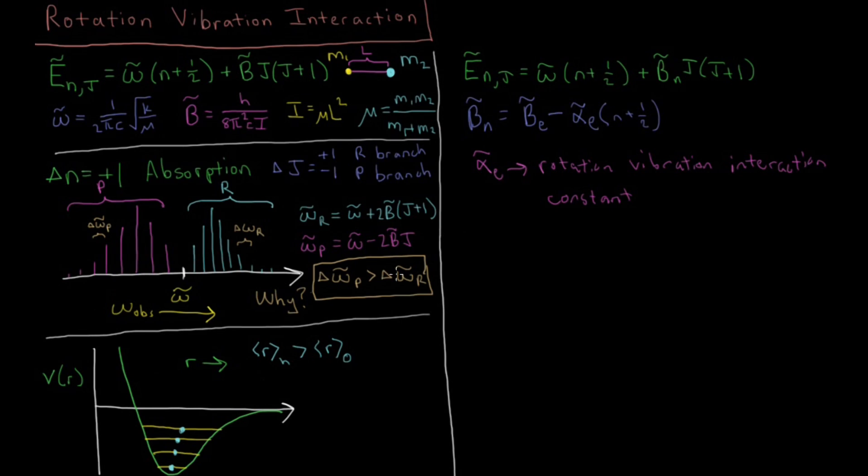And so what does this end up meaning for us? Well we can see that since as n goes up, that means our bond length L is going to go up slightly. Because L is in the moment of inertia that means our moment of inertia goes up. And because that moment of inertia is in the denominator of our rotational constant, that means our rotational constant goes down. So this α is going to be some positive value and this B of n is going to decrease as n increases.